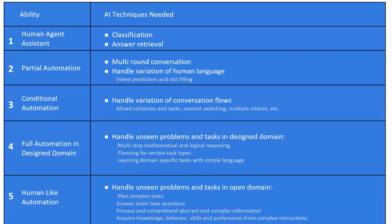For level five, the virtual assistant should be human-like and can handle unseen problems and tasks in the open domain. It needs to handle complex tasks, do some planning, answer broad questions, process and comprehend abstract and complex information, and acquire knowledge, behavior, skills, and preferences from complex instructions. The virtual assistant should have a model of the external world and all its possible actions, try various alternatives and choose the best action to take, and utilize its knowledge of the past to deal with the present and the future. It's human-like.